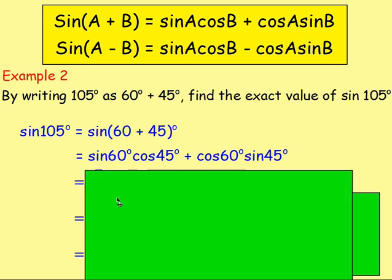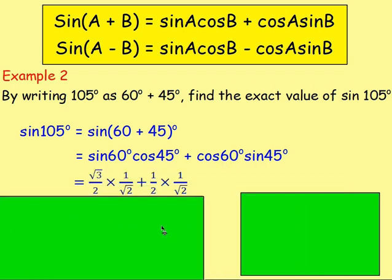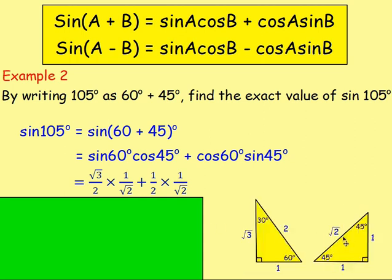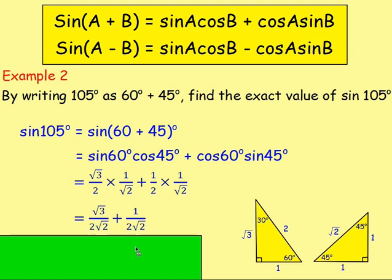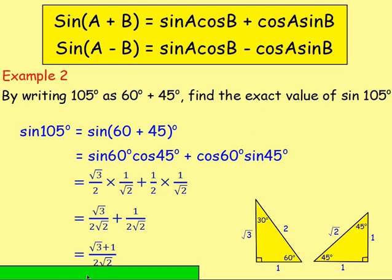From there, you use your exact value triangles because you know sine 60, cos 45, cos 60, and sine 45. To multiply fractions, multiply the numerators together and the denominators together. So we end up with root 3 over 2 root 2, adding on 1 over 2 root 2. The denominators are the same, so you can add the numerators, giving us root 3 plus 1 over 2 root 2.